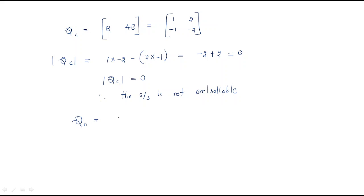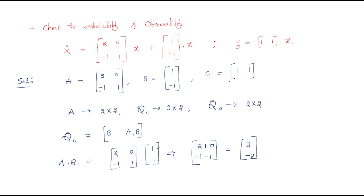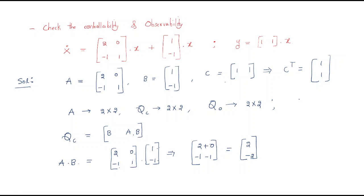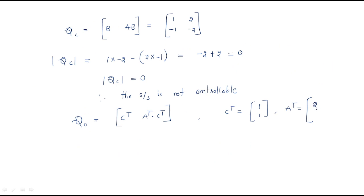Next we find observability. The observable matrix Q_0 is formed from C^T and A^T·C^T. C is [1, 1], so C^T is a column vector [1; 1]. A^T is the transpose of A = [0, -1; 1, 1], giving A^T = [0, 1; -1, 1].